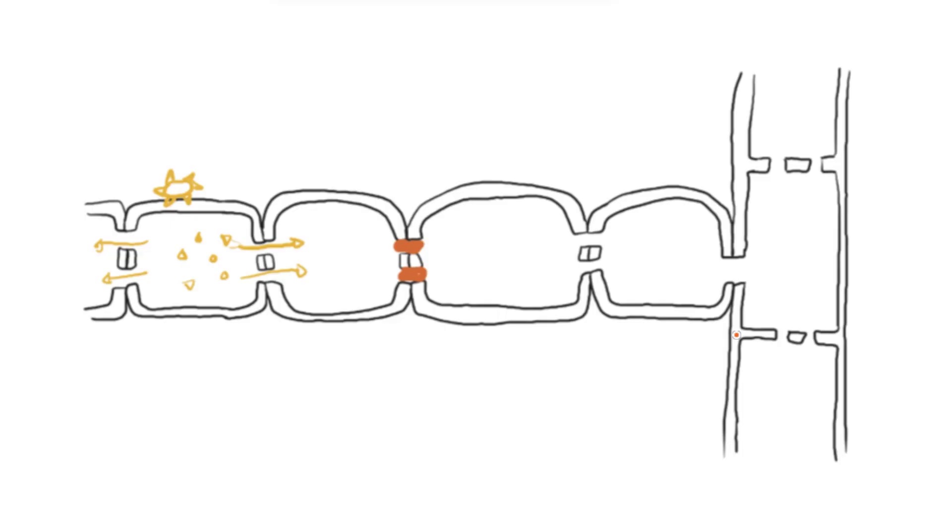Callose can also deposit itself along the cell wall or between the cell wall and cell membrane. By doing that, even if the pathogen breaks through the cell wall, it won't be able to enter the cell through the plasma membrane, further preventing pathogen entry.